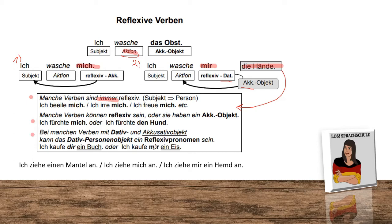The third case: 'Bei manchen Verben mit Dativ und Akkusativobjekt kann das Dativ-Person-Objekt ein Reflexiv-Pronomen sein.' With some verbs that have Dativ and Akkusativobjekt, the Dativ-Person-Objekt can be a reflexive pronoun. It doesn't necessarily have the same meaning as the subject. For example: 'Ich kaufe dir ein Buch' — I'm buying you a book — or 'Ich kaufe mir ein Eis' — I'm buying myself an ice cream.